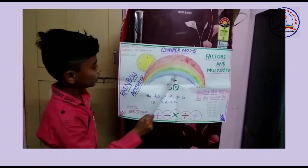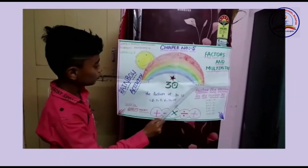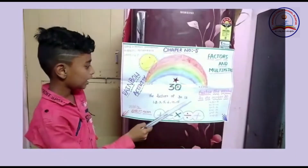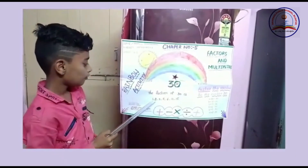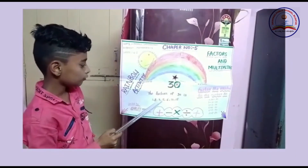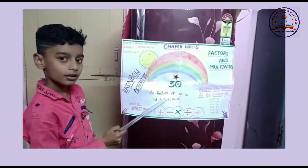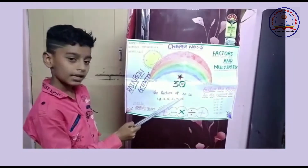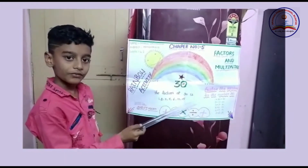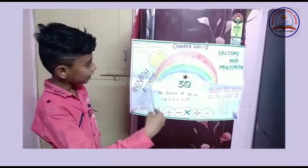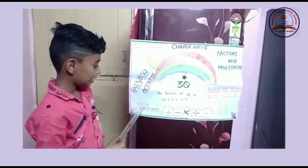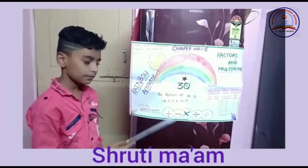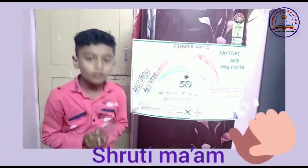15 × 2. The factors of 30 are 1, 2, 3, 5, 6, 10 and 15. This activity was guided by Shurti ma'am. Thank you.